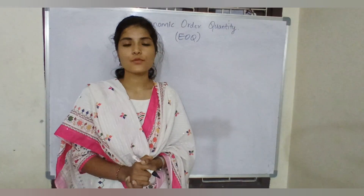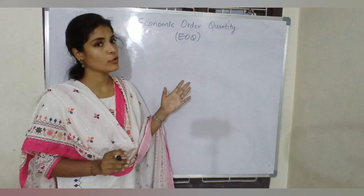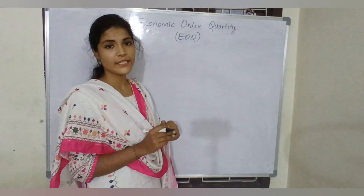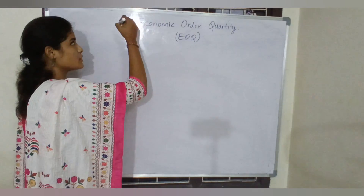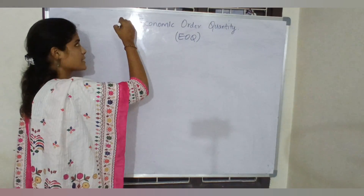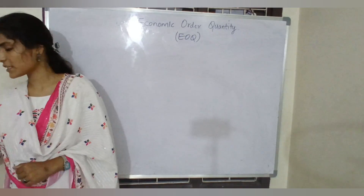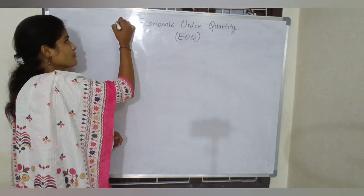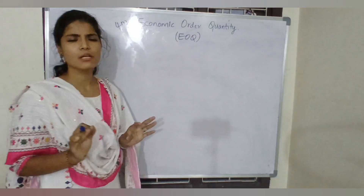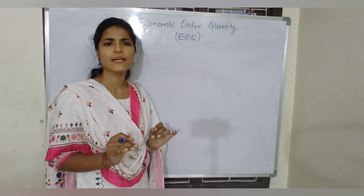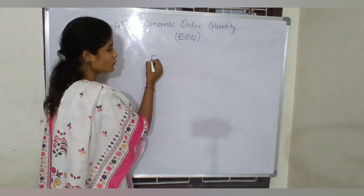Hello, welcome back to our channel. In this video we'll discuss the calculation of EOQ, that is Economic Order Quantity, from cost accounting unit number two. This is very useful for your four-mark compulsory question. We can expect a problem from unit number two on EOQ, which you can easily finish in five to ten minutes. So what is the EOQ formula?